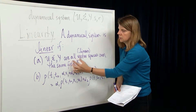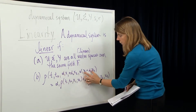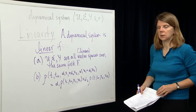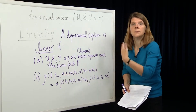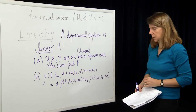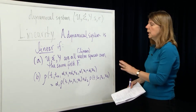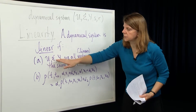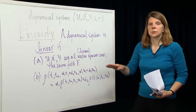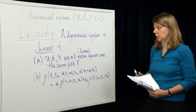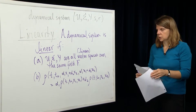You can see immediately why we need to define the input, state, and output spaces over the same field F, because it's the same coefficients alpha1 and alpha2 used across all three spaces. Linearity is defined in terms of these two arguments — the state space and the input space — and it's defined in terms of the response function. A dynamical system is linear if the input, state, and output spaces have vector space structure over the same field F, and the response function is linear in the states and the inputs. You can't just be linear with respect to the inputs; it has to be linear with respect to the initial state as well.